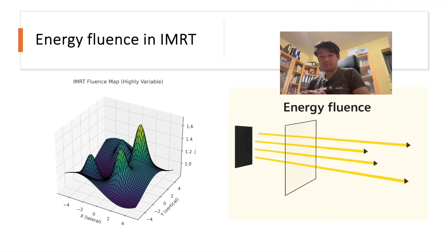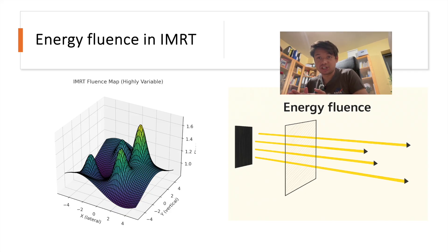In IMRT, the fluence map is highly variable, with some areas receiving more photons and energy than others. This modulation helps target the tumor while sparing normal tissues.